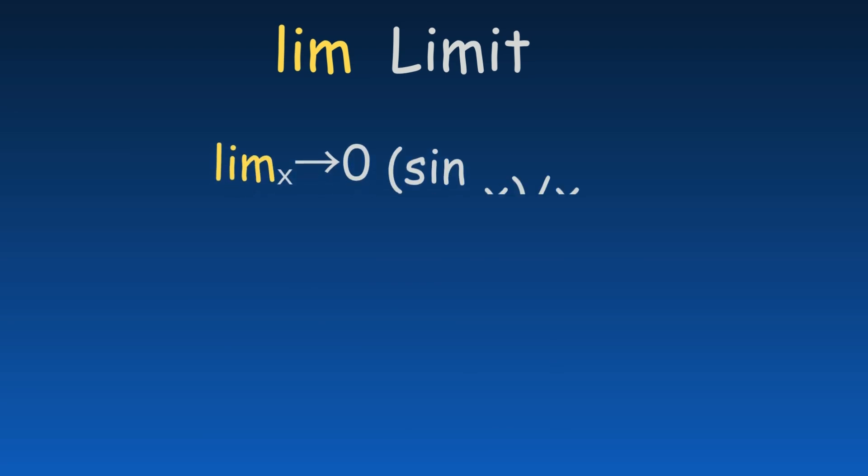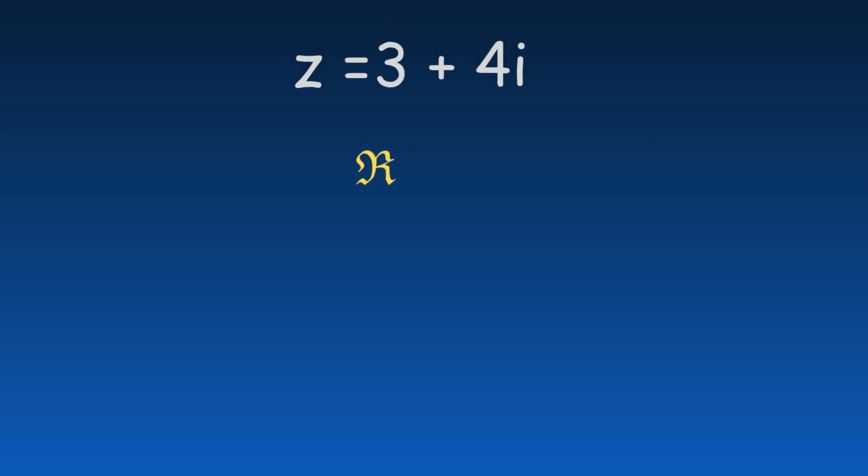A limit describes how a function or expression behaves as the input approaches a specific value. The stylized r symbol is used for the real part of a complex number, while fancy i represents the imaginary part. Placing a bar above a complex number denotes its complex conjugate, which simply changes the sign of its imaginary part.